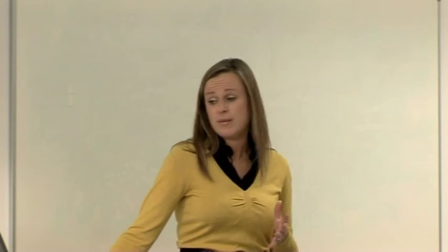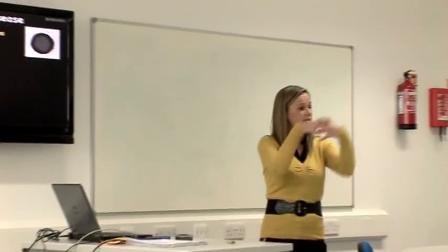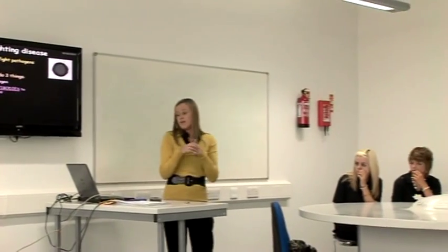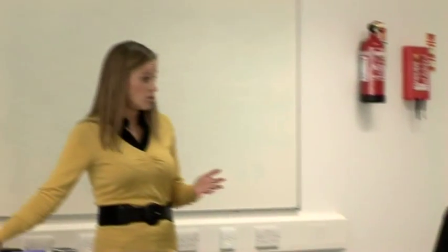White blood cells do three main things you need to remember. They can eat the pathogen - literally go around and engulf it, cleaning up the blood. They can make antibodies, which help to fight the pathogens. And they can also produce anti-toxins: when bacteria make a toxin, the white blood cell makes an anti-toxin that neutralizes it. So the three jobs are: engulfing and digesting the pathogen, producing antibodies to fight the disease, and producing anti-toxins to neutralize the toxins.